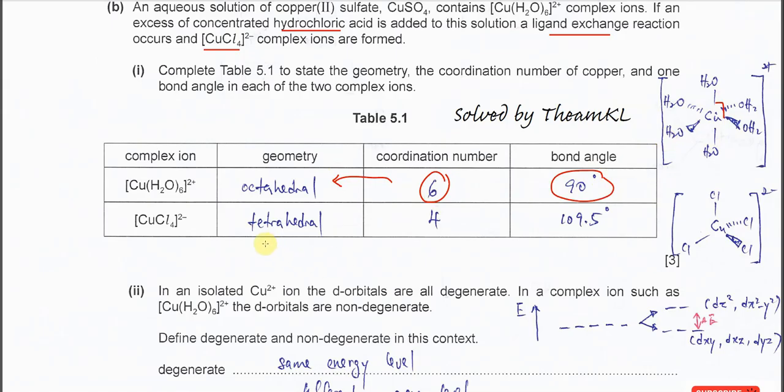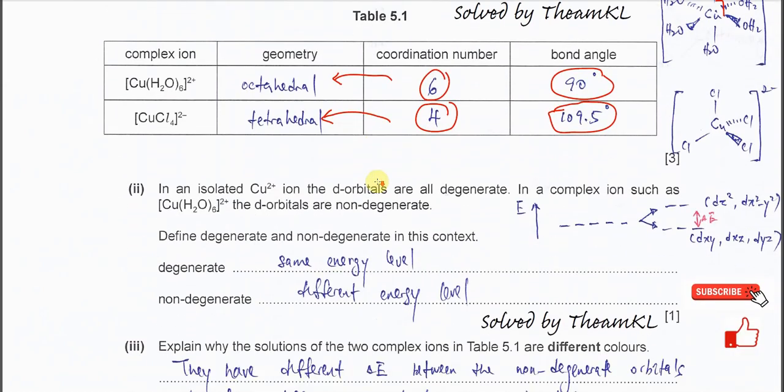For the tetrachloro copper complex, the coordination number is 4. Copper with four chlorides forms a tetrahedral geometry. Tetrahedral bond angle is 109.5 degrees. Part 2: In an isolated Cu2+ ion, the d orbitals are all degenerate, same energy level. In a complex ion, they are non-degenerate.